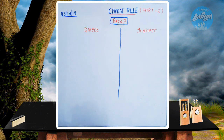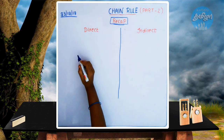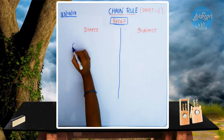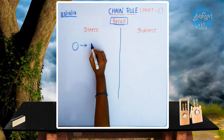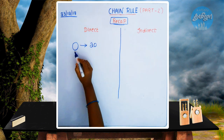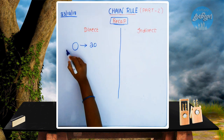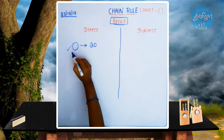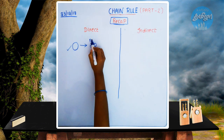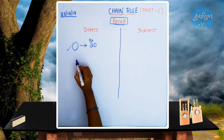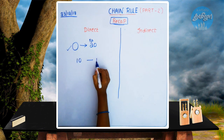What do we mean by direct? Suppose there is a ball. If you look at the cost of the ball, it will be 20 rupees. If you look at the quantity, it will be the cost. There will be 10 balls.